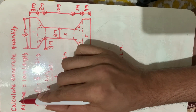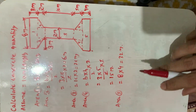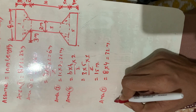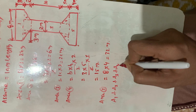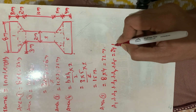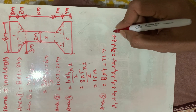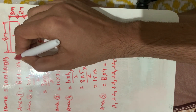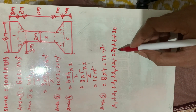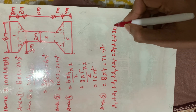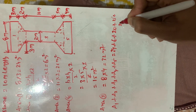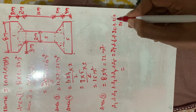Now to calculate the concrete quantity we need to add all the areas: A1 + A2 + A3 + A4 + A5. That is 24 + 6 + 20 + 15 + 32 square meters. Note that all units are square meters since we are working in square meters.